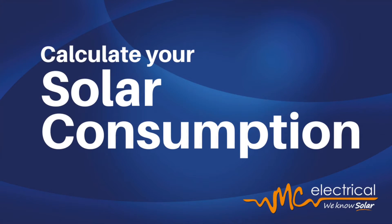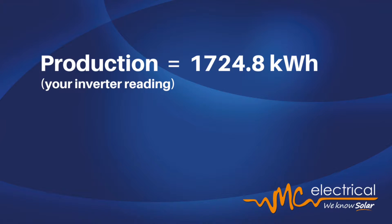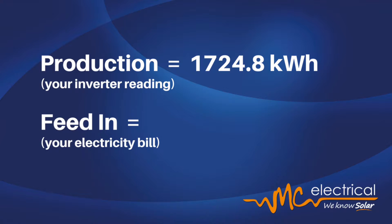Here's where we work backwards to calculate how much energy we have used directly from our solar. We now know how much we have produced for this period. We also know that we fed back 688 kilowatt hours to the grid, which reflects as credit on our bill.